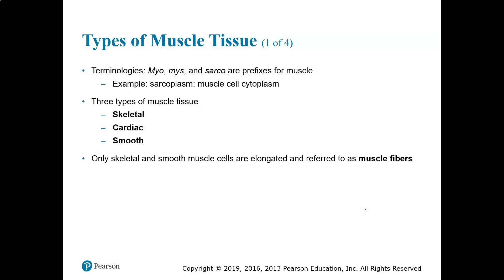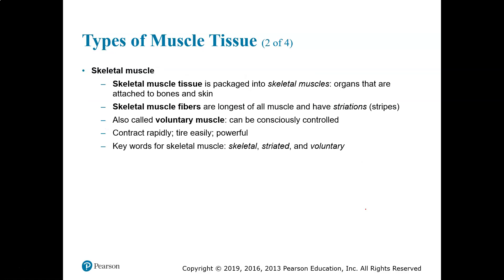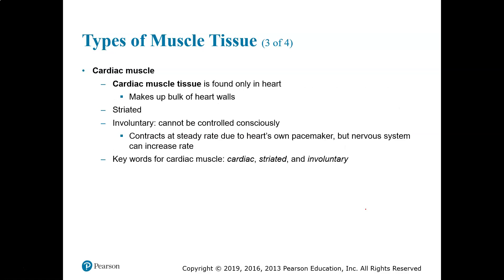There are three types of muscle tissue: skeletal, cardiac, and smooth. Skeletal muscle tissue is packaged into skeletal muscles, which are organs attached to bones and skin. Skeletal muscle fibers are the longest of muscle tissue and have striations. Skeletal muscle is also called voluntary, meaning you can consciously control when it contracts. The contractions are rapid, these muscles tire easily, and they are very powerful. Key words: striated and voluntary.